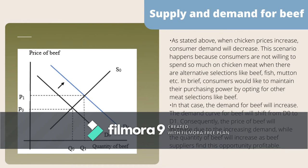When chicken prices increase, consumer demand will decrease because consumers are unwilling to spend so much on chicken when alternative selections like beef, fish, and mutton are available. Consumers opt for other meat selections to maintain their purchasing power. As a result, demand for beef will increase, shifting the demand curve from D0 to D1. Consequently, the price of beef will increase due to rising demand, while the quantity of beef will also increase as beef suppliers find this opportunity profitable.